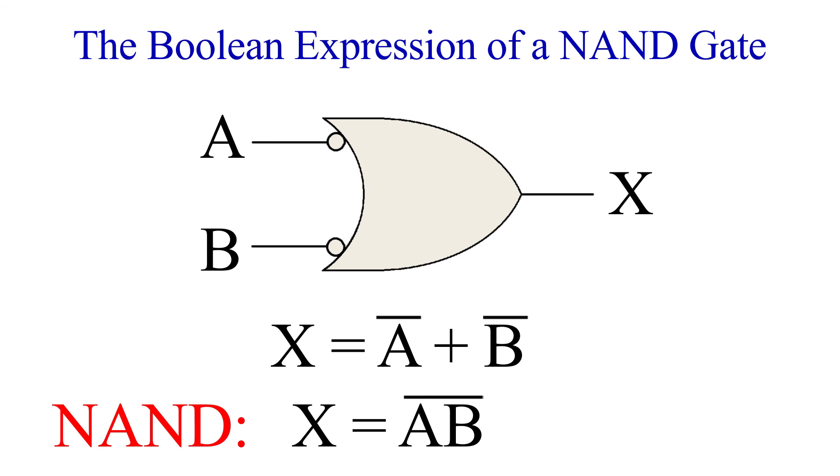However, the negative OR does not cover the addition symbol. If we had started with just the boolean expression, this would tell us how and where to place the bubble on the gate. If the bar covers the entire expression, then it goes on the output. If it only covers a single letter, then we place the bubble on that input.